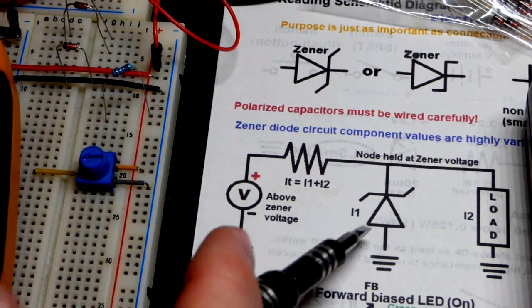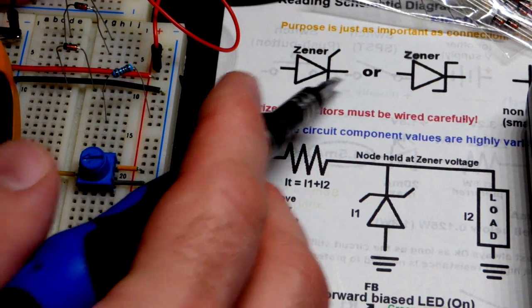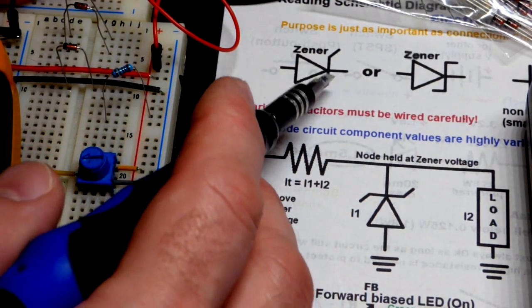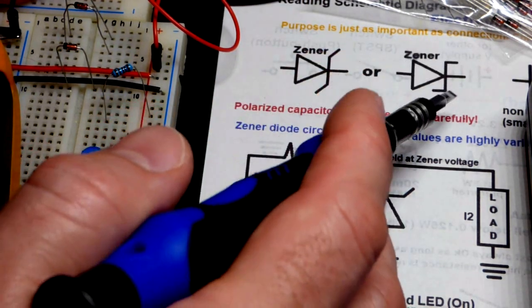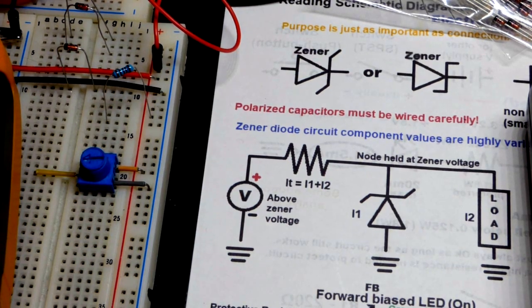So now in this video, we're going to look at the Zener diode, and usually its schematic either looks like this or like that. So it's like a regular diode, except for the cathode side has a couple extra lines that kind of resemble Z's. So that makes it a little easier to remember that it is a Zener diode.